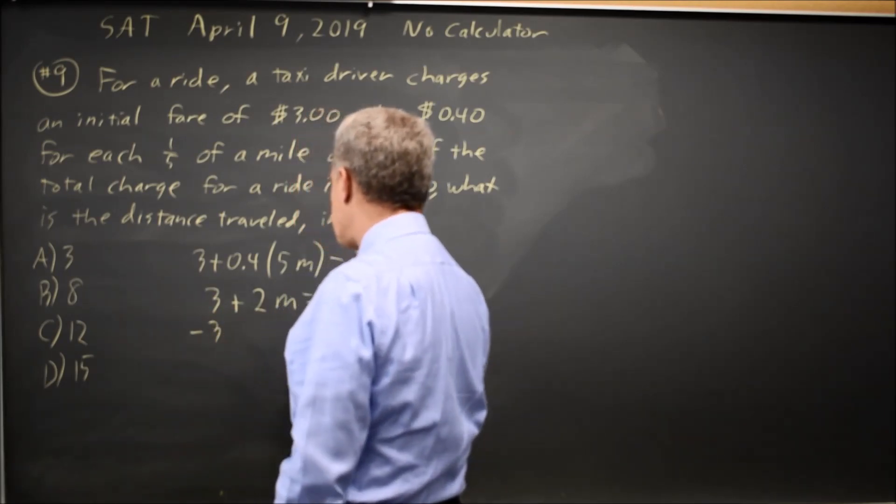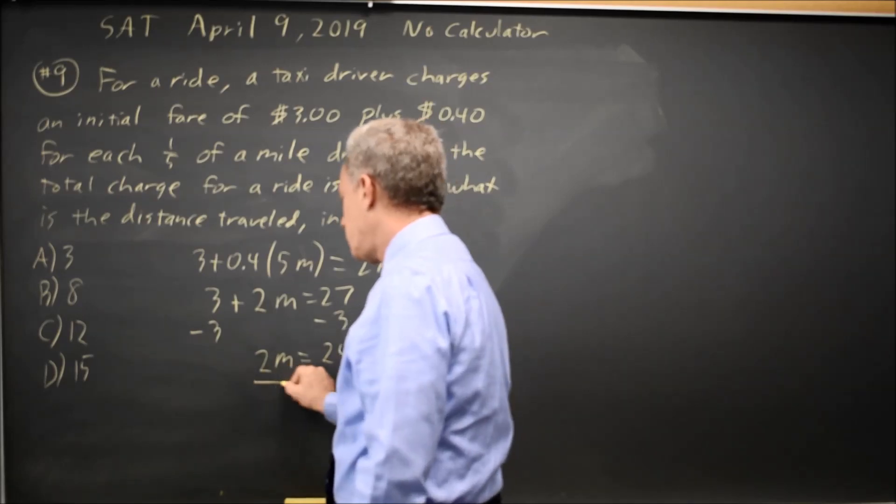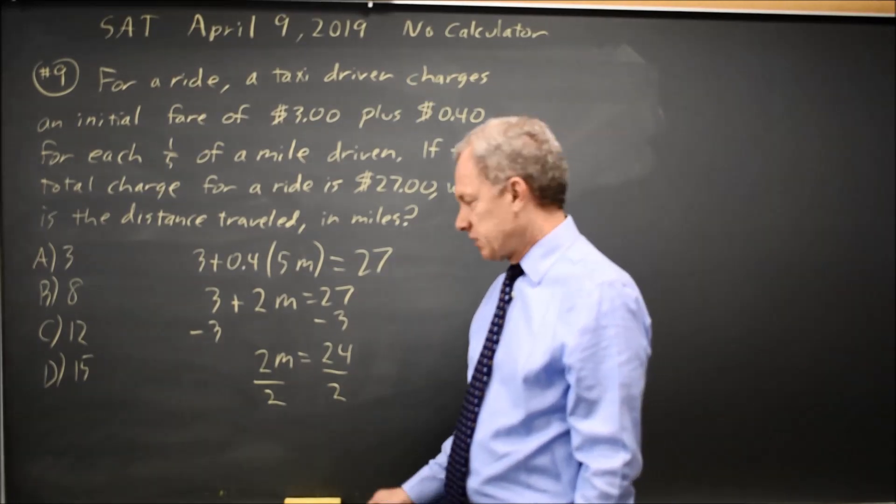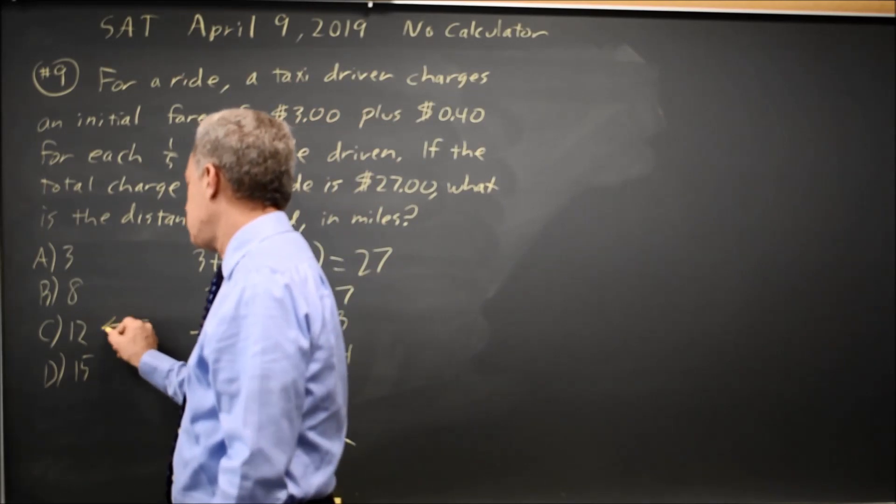Subtract 3 from both sides of the equation to get the 2m by itself. 2m equals 24. Divide by 2 on both sides. Always do the same thing to both sides of an equation. So m equals 24 over 2 is 12, which is choice C.